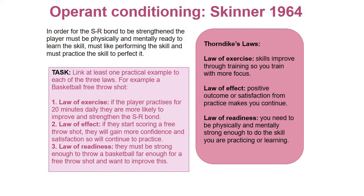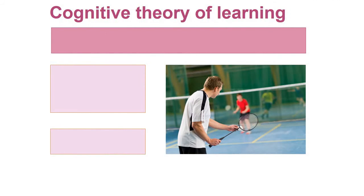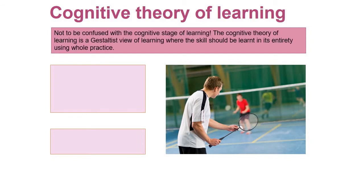The next theory is the cognitive theory of learning - rushing through this briefly to support work we've already done. This isn't to be confused with the cognitive stage of learning when we look at cognitive, associative, and autonomous - those are three different stages of learning. The cognitive theory of learning is a view where the skill should be learned in its entirety using whole practice. When we looked at practice methods previously, we looked at whole practice and part practice and whole-part-whole; this deals specifically with whole practice.